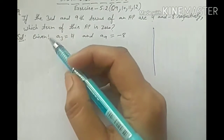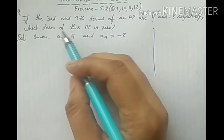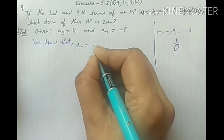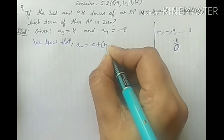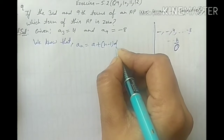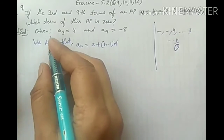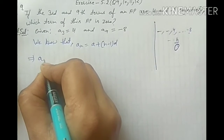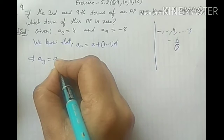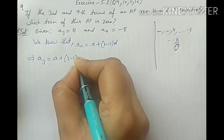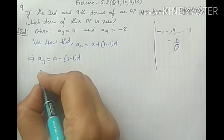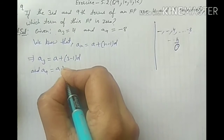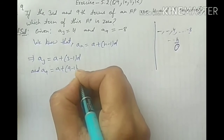हमें ये बताना है कि इस AP की कौन सी term 0 है। हमने terms related जितनी भी problems की हैं, उसमें हमने AN की formula use किया है - that is A plus N minus 1 into D, which is the Nth term. So according to question, if we put 3 in place of N, then A3 = A plus 2D, and A9 = A plus 8D.